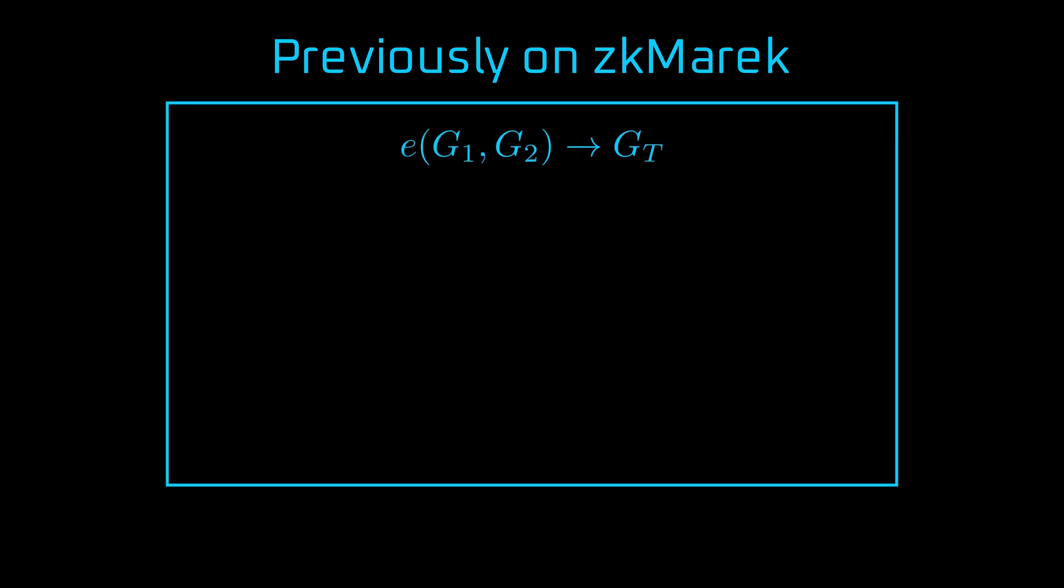We also covered the concept of pairings, which imitate multiplication of elliptic curve points. The pairing operation is bilinear, meaning it allows us to prove and verify certain identities, by leveraging the property that a scalar can be moved between the arguments.